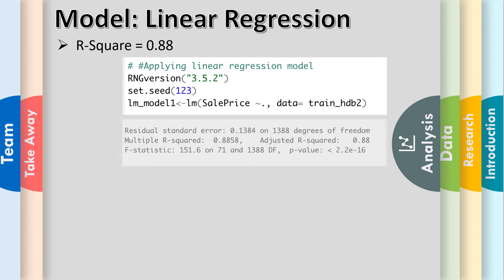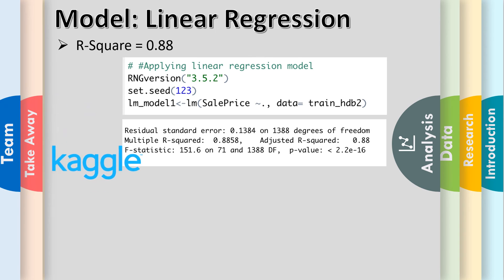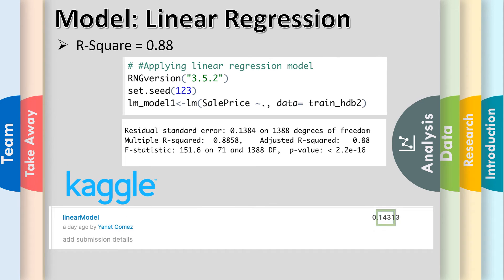Our first model, linear regression, got an R-squared score of 0.88 and a Kaggle score of 0.14, which places us roughly halfway through all of the submissions — a good start.